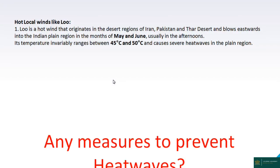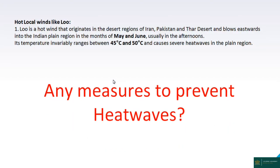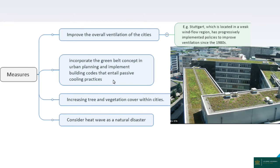Measures to prevent heat waves include scientific and government approaches. Cities should improve overall ventilation and incorporate green ventilation. Since the 1980s, the concept of green buildings has been incorporated into urban planning. Building codes and passive cooling practices should be implemented. The concept of urban forestry, rural forestry, and farm forestry under national afforestation programs should be followed, along with increasing tree and vegetation cover within cities.